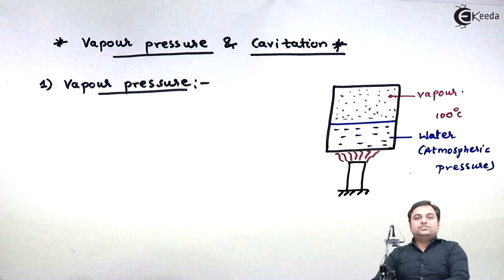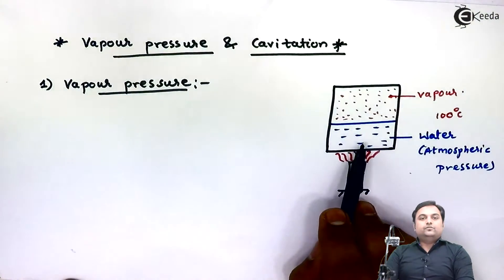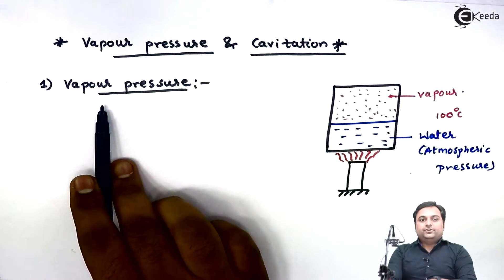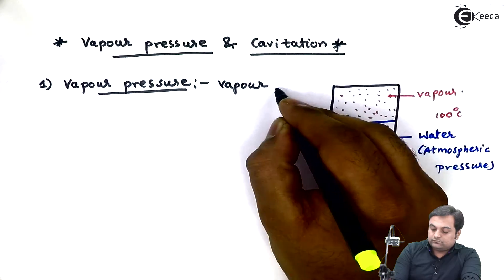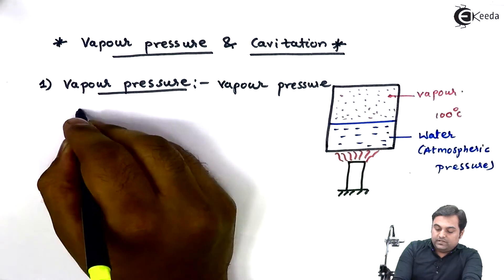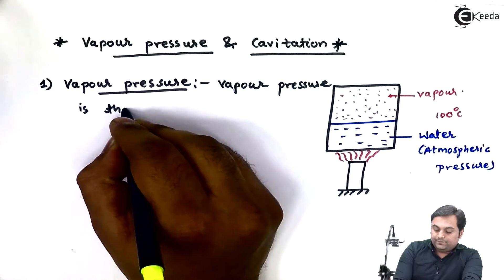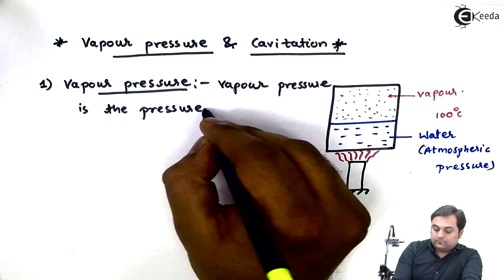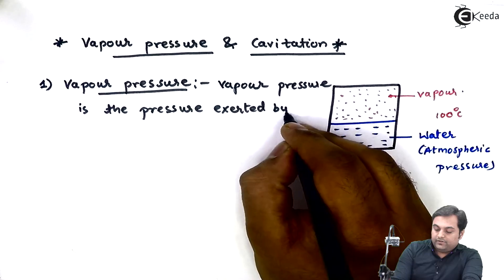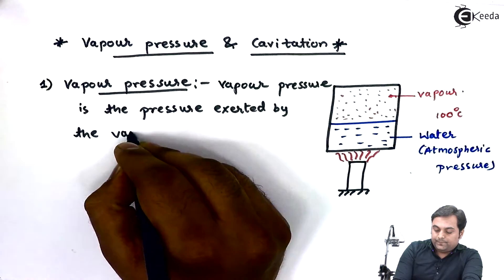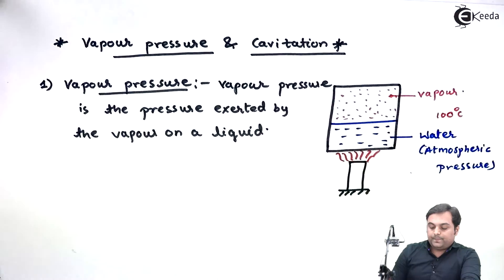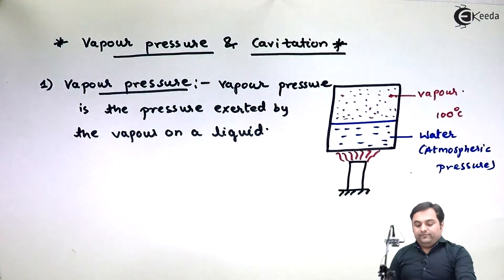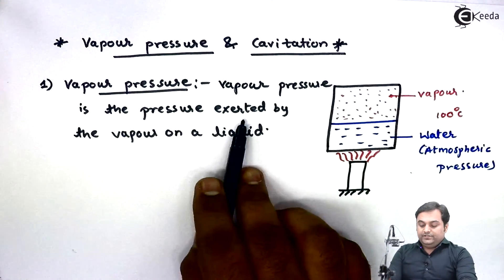When the temperature reaches 100 degrees, water molecules are converted into vapor, and this vapor will exert a pressure on the liquid water. This pressure is called vapor pressure. So vapor pressure is the pressure exerted by the vapor on a liquid.